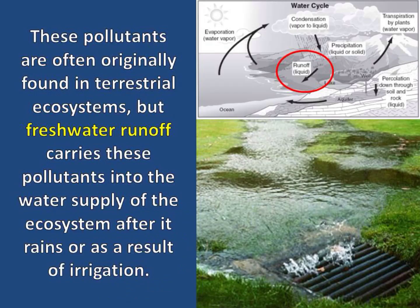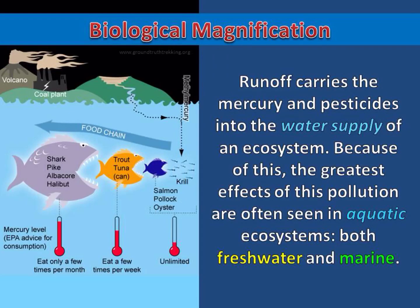These pollutants are often originally found in terrestrial ecosystems, but freshwater runoff carries these pollutants into the water supply of the ecosystem after it rains or as a result of irrigation. Runoff carries the mercury and pesticides into the water supply of an ecosystem. Because of this, the greatest effects of this pollution are often seen in aquatic ecosystems, both freshwater and marine.